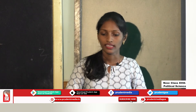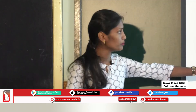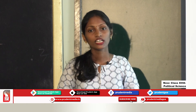In example two, there is one person named Ramdhari who has gone shopping to buy a birthday gift for his nine-year-old daughter. He buys a cycle for her which is actually manufactured in China but is being marketed in India. It meets his requirements of quality as well as affordability. Last year, Ramdhari on his daughter's insistence had bought her a Barbie doll which was originally manufactured in the US but was being sold in India. So in this example, you can see flow of goods from one country to another. This is basically globalization.